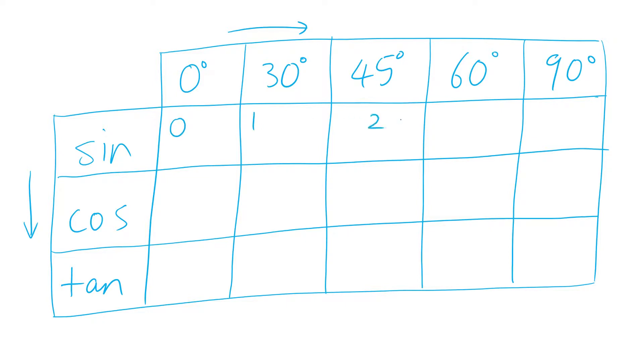Now go 0, 1, 2, 3 and 4 in all these boxes, now square root everything and then divide it by 2. So very simple process: 1, 2, 3, 4, square root everything, divide by 2.